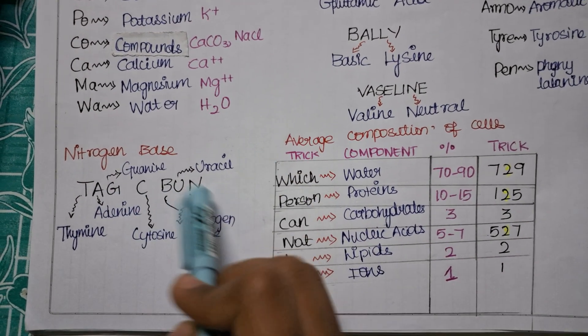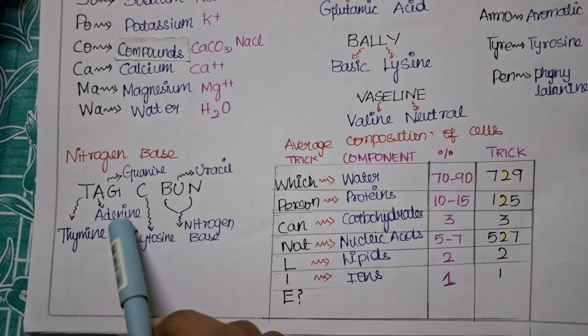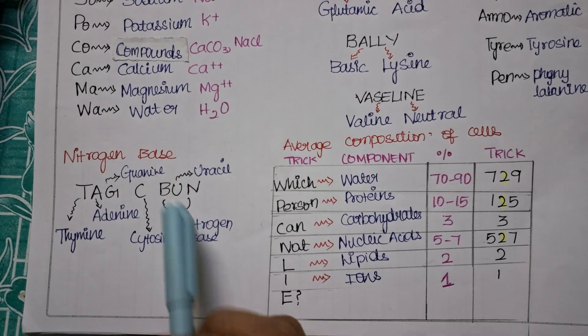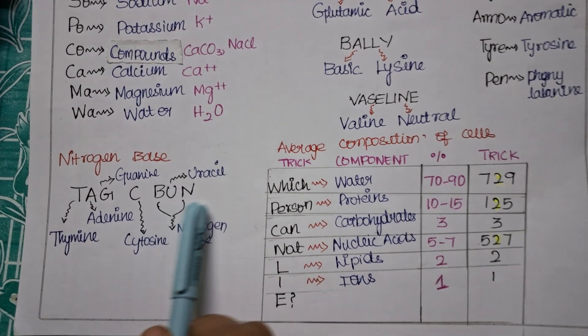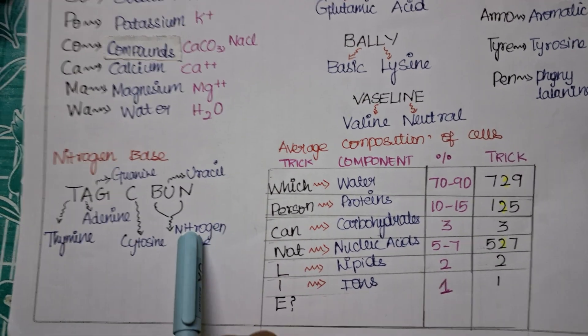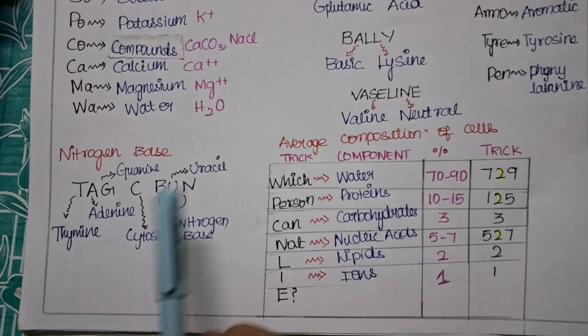TAG C BUN. Now TAG is for your thymine, A is for adenine, G is for guanine, C is for cytosine, U is for uracil, B N is for nitrogen base. Nitrogen is for N, B is for base. Are we clear with nitrogen base? TAG C BUN.